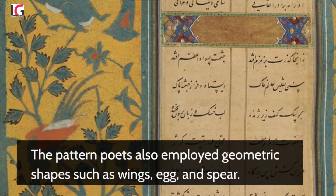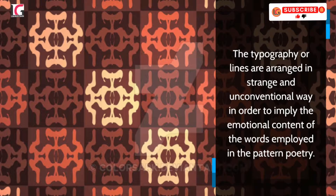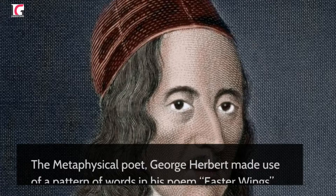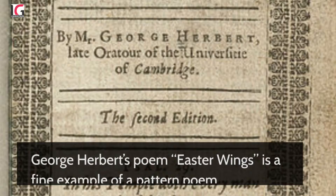The pattern poets also employ geometric shapes such as wings, egg, and spear. The typography or lines are arranged in a strange and unconventional way in order to imply the emotional content of the words employed in pattern poetry. The metaphysical poet George Herbert made use of a pattern of words in his poem Easter Wings, which is a fine example of a pattern poem.